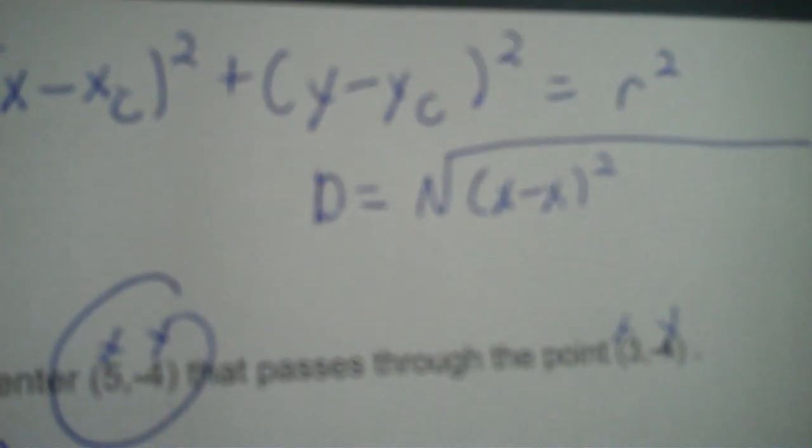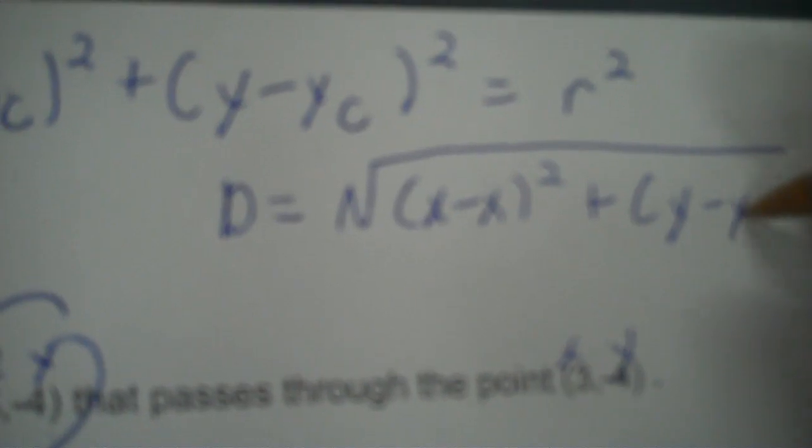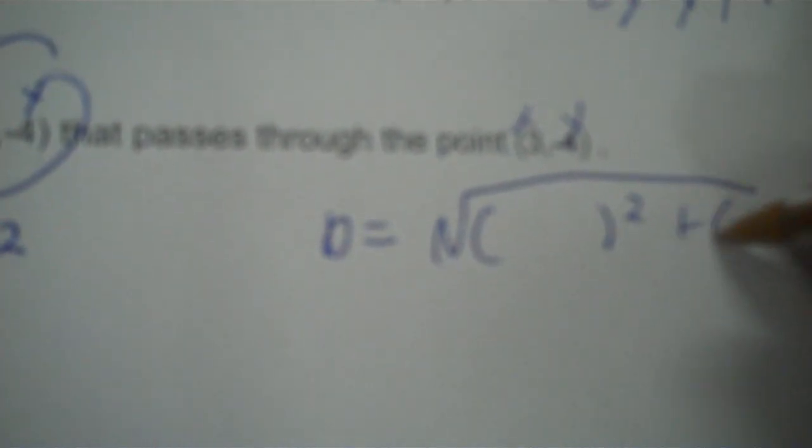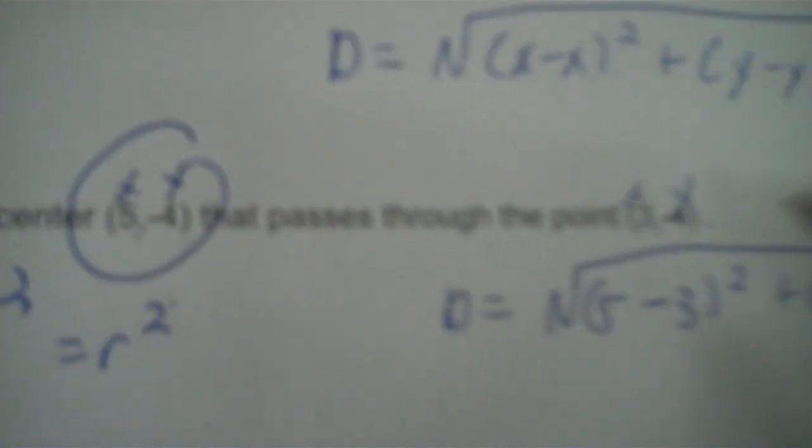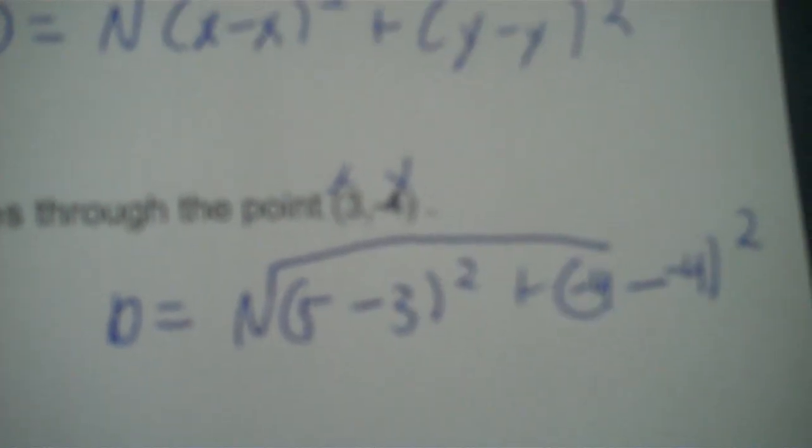I want to find the distance from the center to this point. To find it, you use the distance formula. The distance formula is: the square root of (x minus x) squared plus (y minus y) squared. So, d equals — you take your two x's, 5 and 3, start with the higher one. Then the y's: negative 4 minus negative 4. 5 minus 3 is 2.